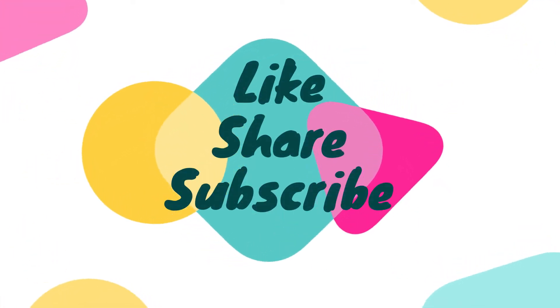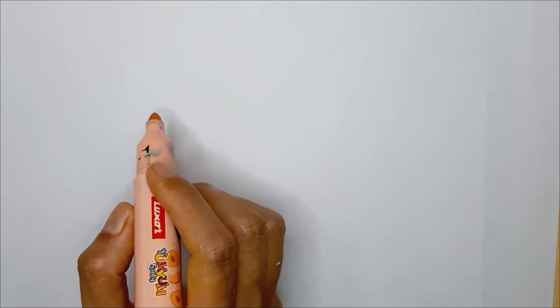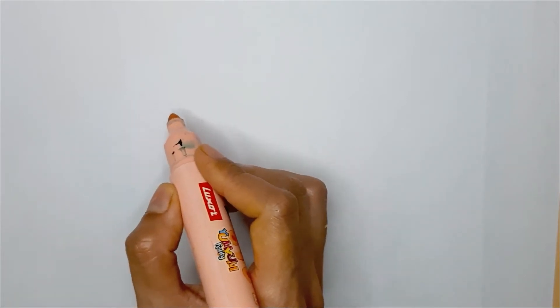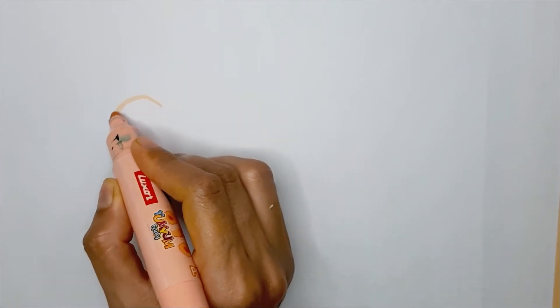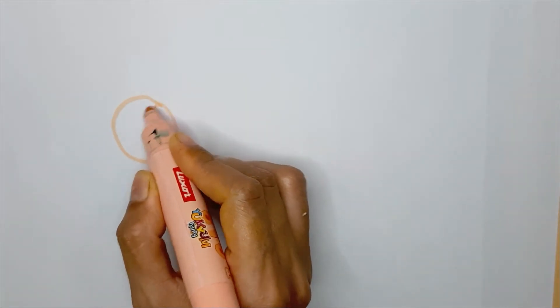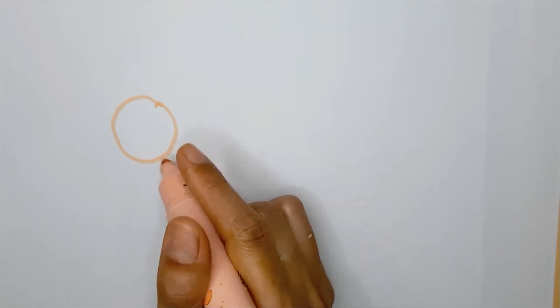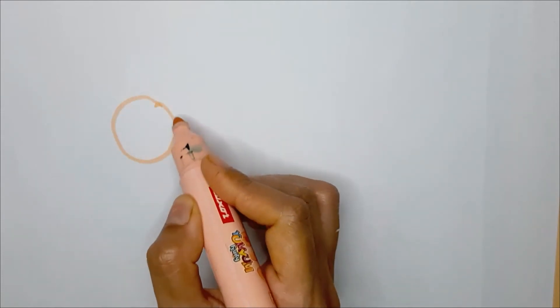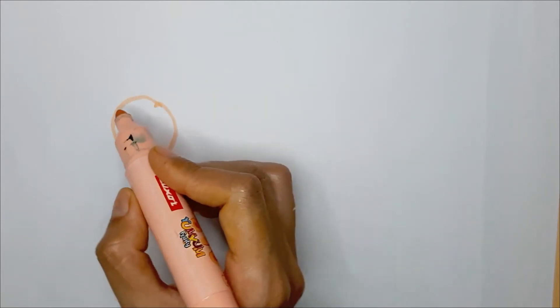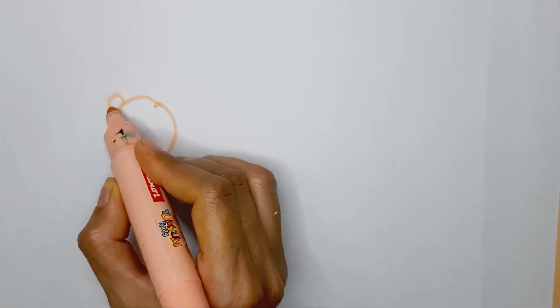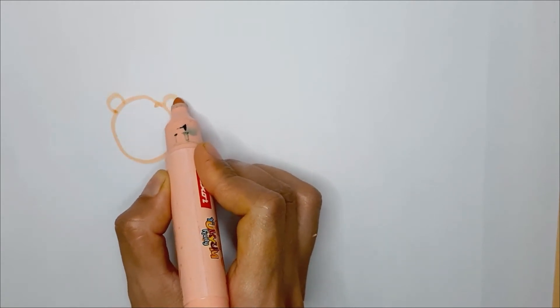So let's get started! First of all, you make a circle. You know how to draw a circle by now, right? This is the face of the lion. Then we make two little circles - yes, you're right, these are the ears.